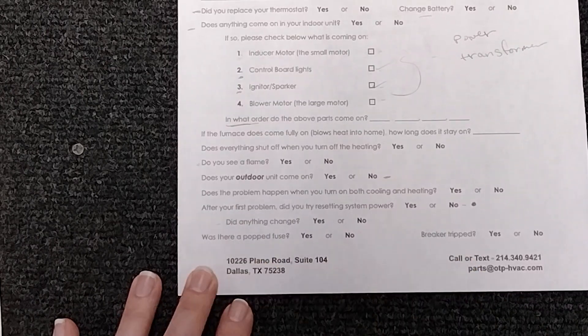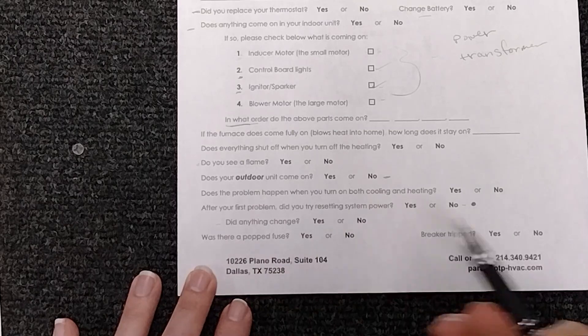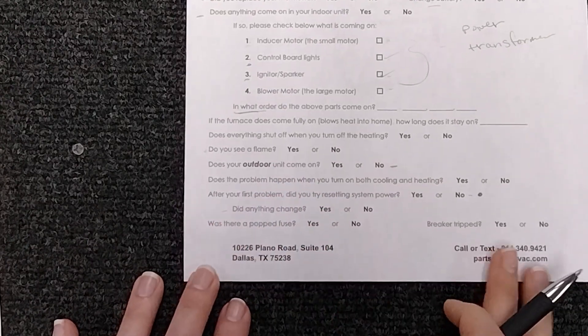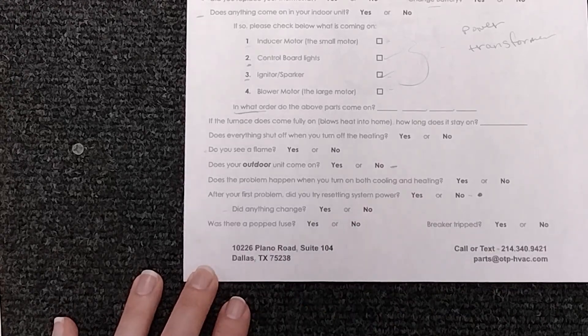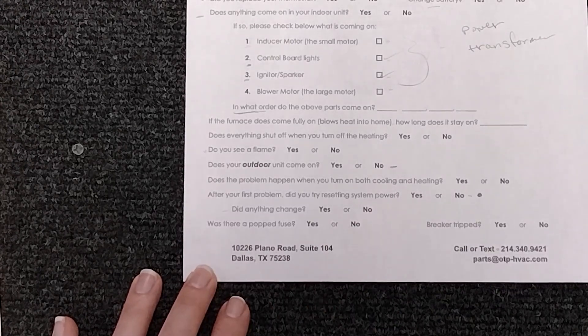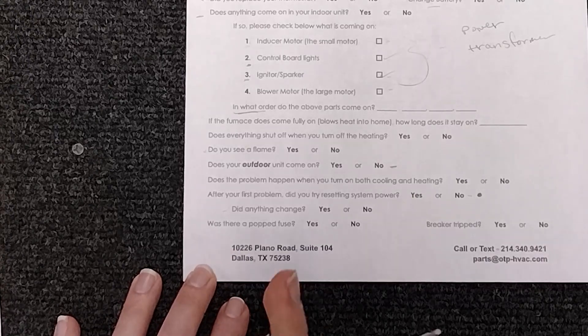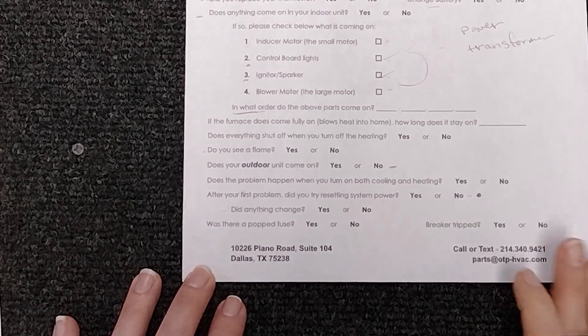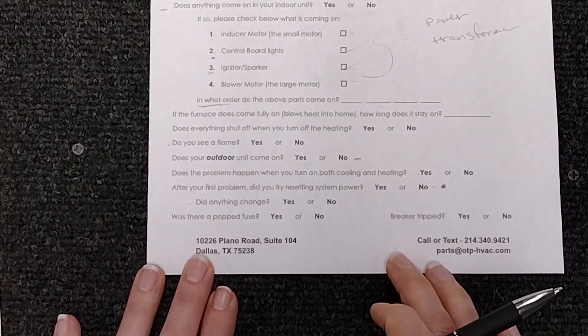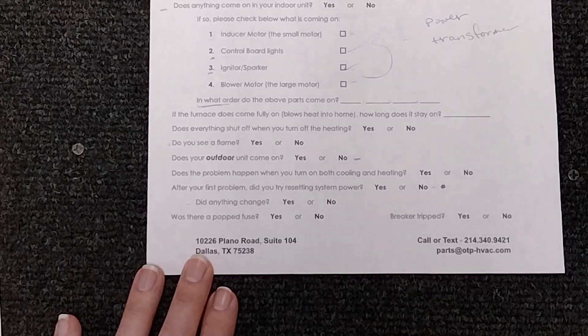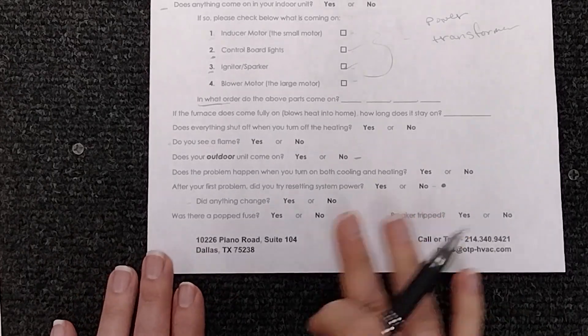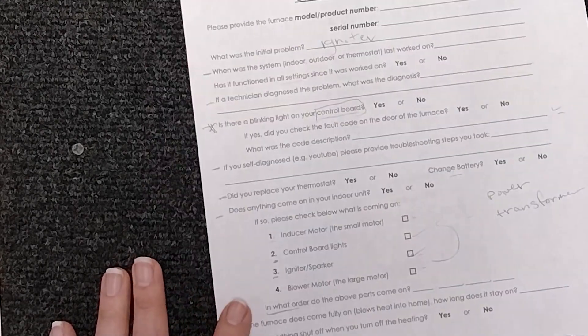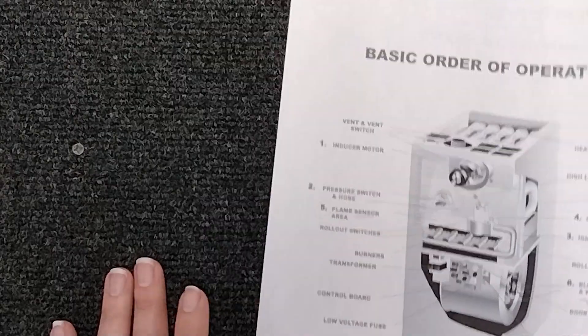So once you've done that did anything change? Has the code changed on your board? And this is something very important to pay attention to. Was there a popped fuse? So say you've put everything back and then all of a sudden you turn it back on and pop another popped fuse. Obviously we've got a short somewhere. Does your breaker trip as soon as you turn on your heat or as soon as your indoor unit comes on? These are all very important things that a technician is looking for. So you as the homeowner can protect yourself by knowing the basic order of operations.